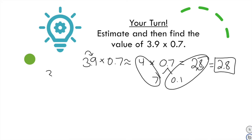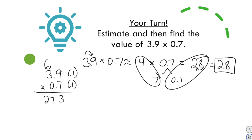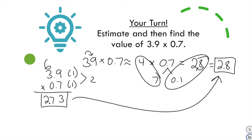Now solve for the exact answer. 7 times 9 is 63. 7 times 3 is 21, plus 6 is 27. One decimal place in the first factor and one in the second — two total — so the decimal goes between the 2 and 7, giving an actual answer of 2 and 73 hundredths. Comparing to the estimate of 2 and 8 tenths confirms it's reasonable.